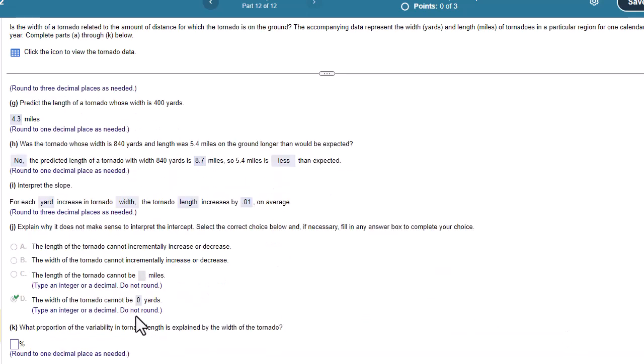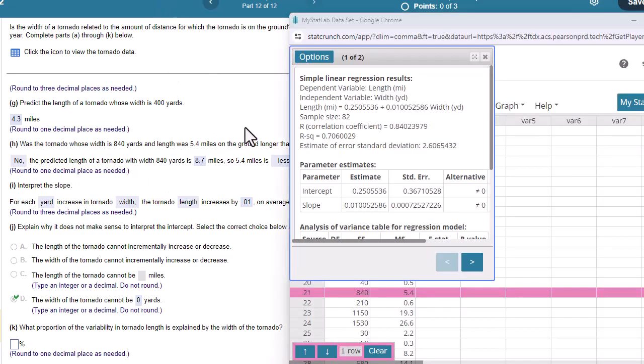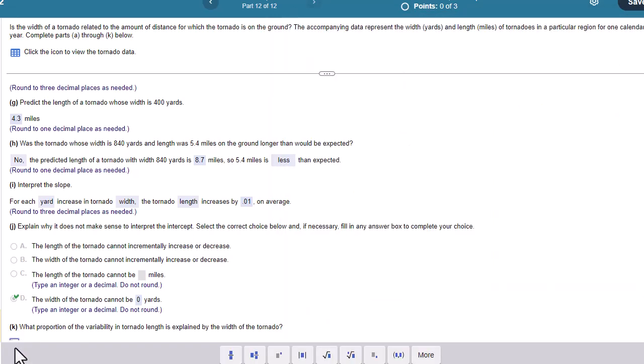What proportion of the variability in tornado length is explained by the width of the tornado? So recall what this number is. This is r-squared. So I'm going to come back over here, r-squared. And r-squared is usually presented as a percent, and r is usually presented as a decimal. So r-squared here is 0.706. So this is going to be 70.6%. All right. Well, I hope that helps.